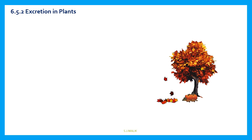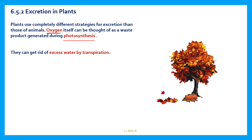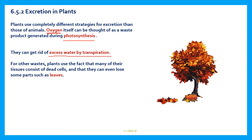Excretion in plants — yes, plants also excrete. They also have waste material in their body and need to get rid of it. Plants use a completely different strategy for excretion than animals. For plants, oxygen produced during photosynthesis is a waste material, and plants release it into the environment — that is one type of excretion. Water is also in excess in plants, so they get rid of excess water by transpiration.